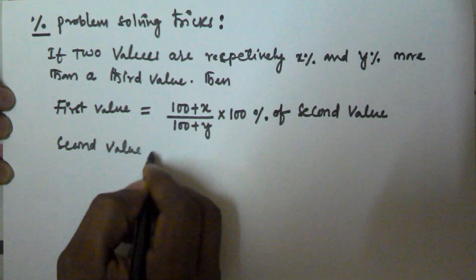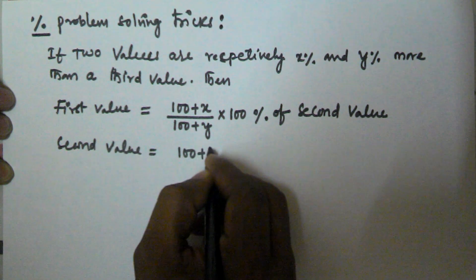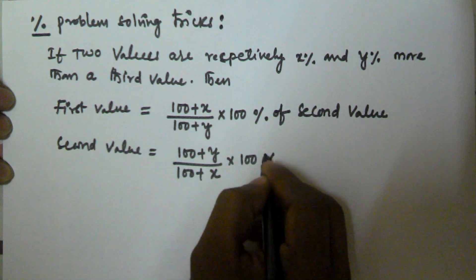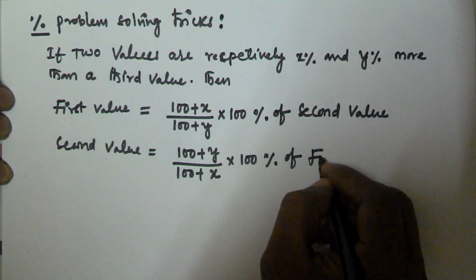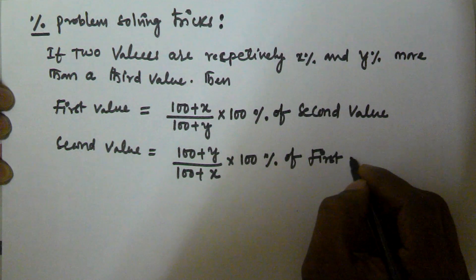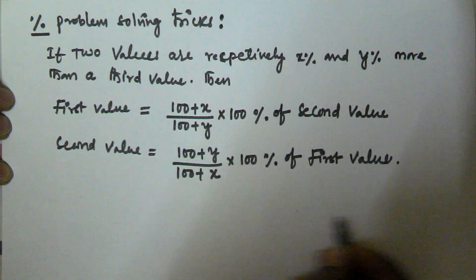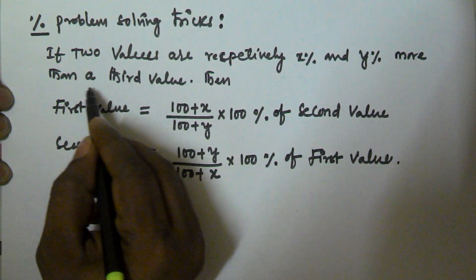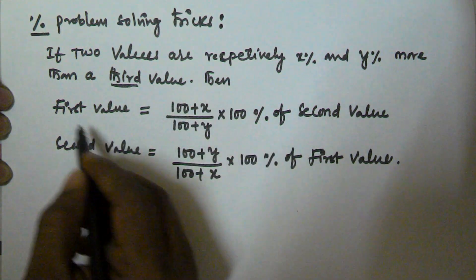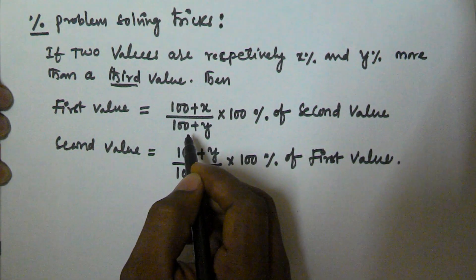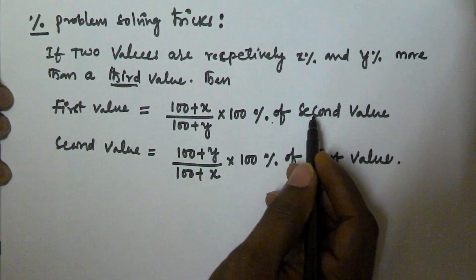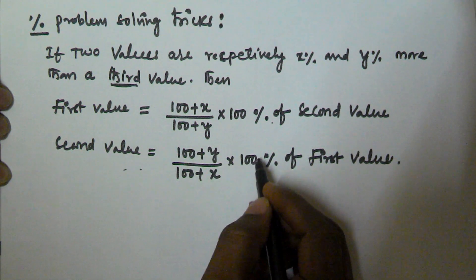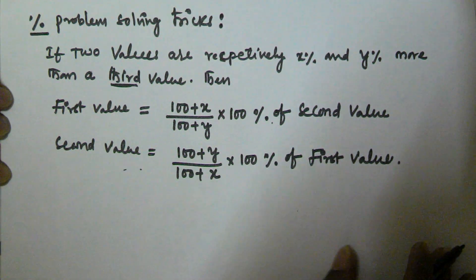The second value is equal to (100 plus y) by (100 plus x) into 100 percentage of the first value. So if two values are respectively x and y percentage more than a third value, then the first value equals (100 plus x) by (100 plus y) into 100 percentage of the second value, and the second value equals (100 plus y) by (100 plus x) into 100 percentage of the first value.